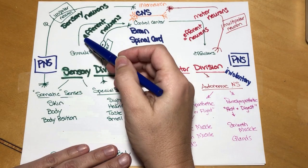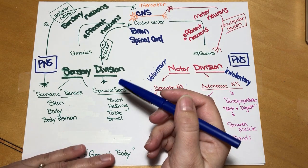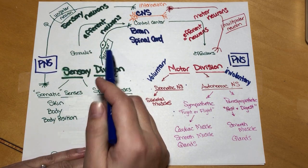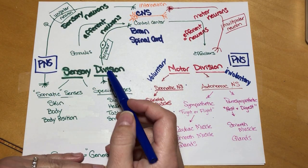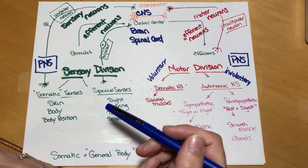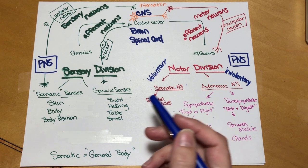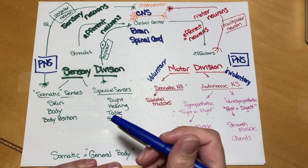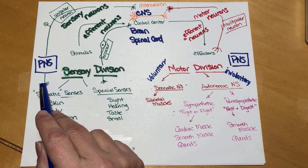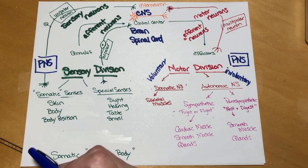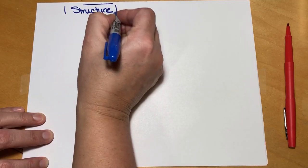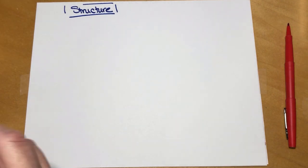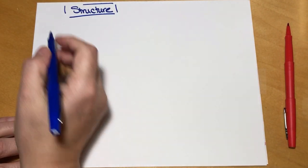Up until now we have learned about our afferent sensory neurons in a very general manner. We did talk about the structure of the neuron itself, whether it was a unipolar or bipolar neuron. But remember, all of the sensations in your body have to be carried on neurons, and so we can classify them in a number of different ways. The first way we're going to learn about is the structural classification, based on the structure of the receptor part of the neuron. Whenever we classify something by structure, we're classifying it based on how it looks.